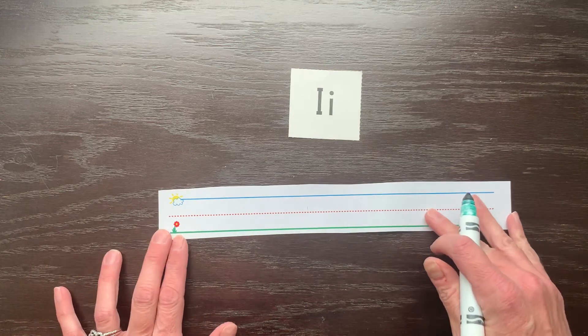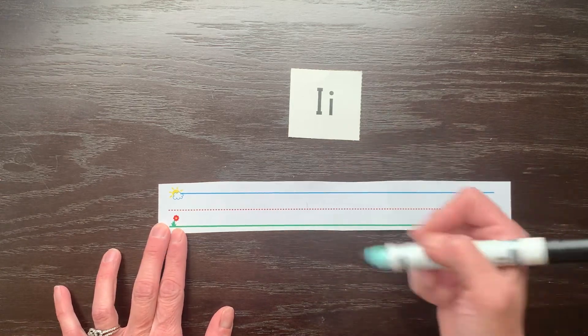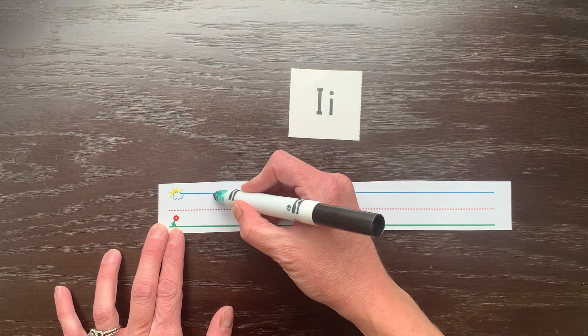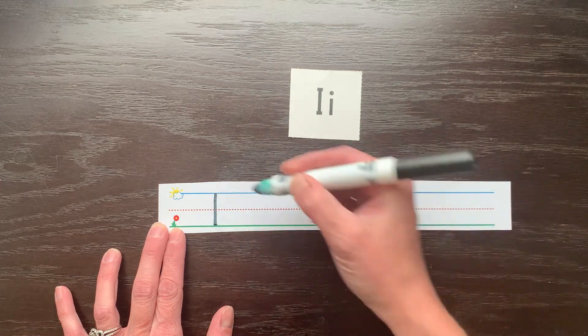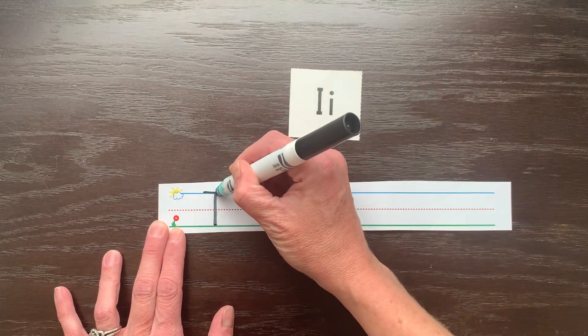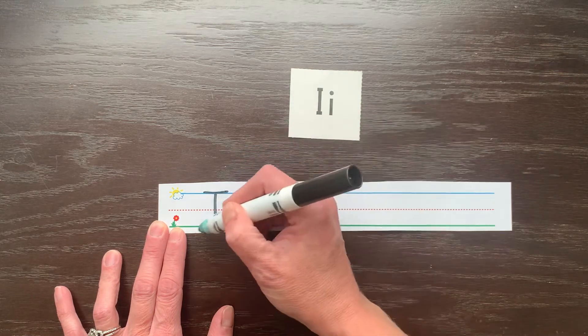Capital I starts at the top like all capital letters and you just make a straight line that goes straight down. Then you're going to pick your pencil up and you're going to add a hat on the top and then a boot on the bottom.